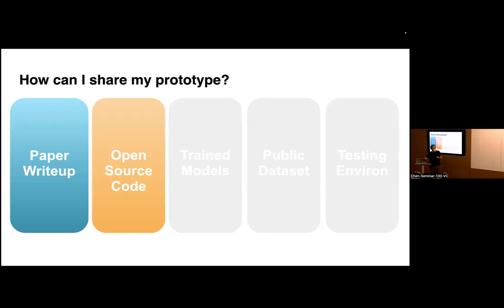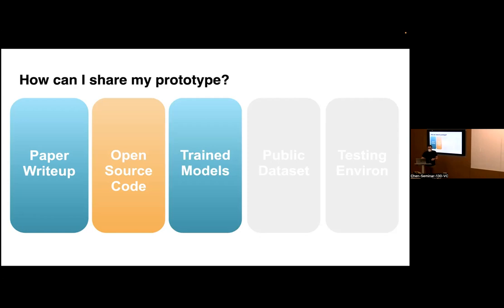Beyond the paper, open source code is the next step. You've all been pushing code to GitHub — that gives people the ability to run the model and inspect what was actually done. Sometimes you just start with open source code and there's no formal write-up at all. But in general, having a paper and open source code are almost like the foundation. Without either one, you're really up a creek.